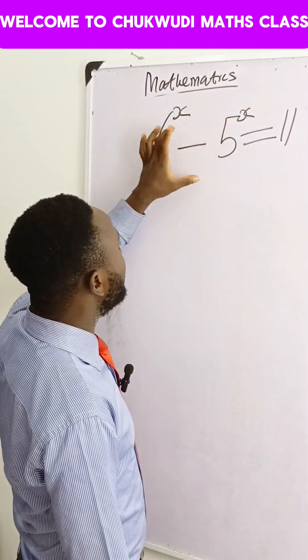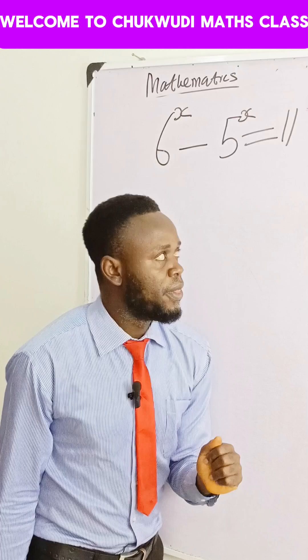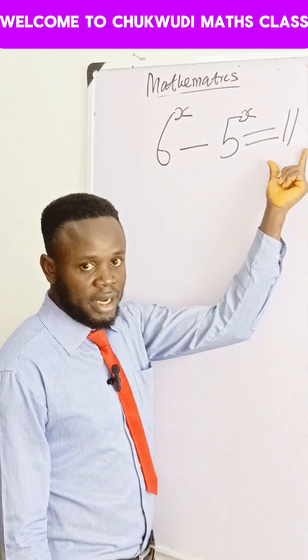There is no way we can simplify this one again to get the value of x that we are looking for. Now let's look at the right hand side.